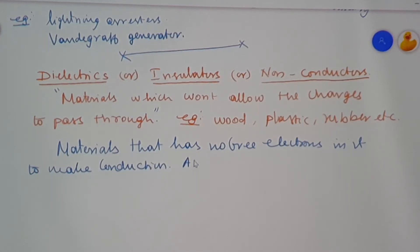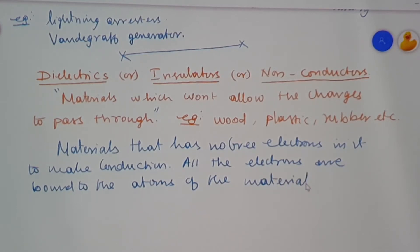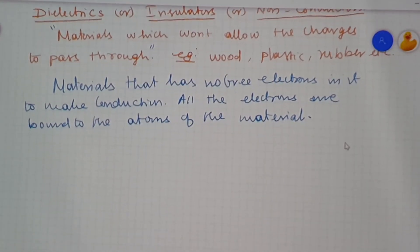All the electrons are bound to the nucleus of the atom, or bound to the atoms of the material. That type of material is called a dielectric, or insulator, or non-conductor. Examples are wood, plastic, rubber, etc.